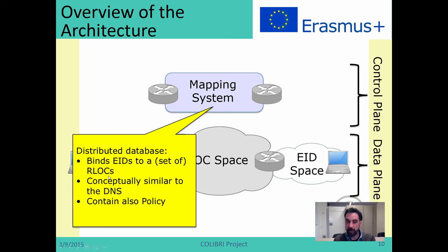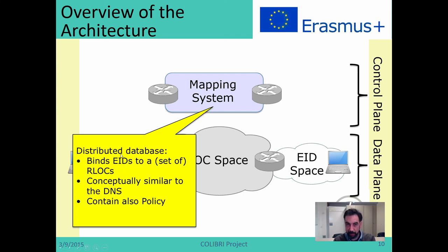If you think about it, this is very similar to what we have today in the DNS — the DNS maps host names to IP addresses. In LISP, you map EIDs to RLOCs, mapping identities to locations. The mapping entries also contain policy information and traffic engineering information, which is why LISP scales. I'm going to explain this a little bit further.